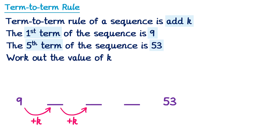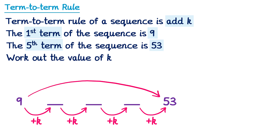From the second to the third term, we add k. And the same from the third to the fourth, and the fourth to the fifth. Notice how to get from 9 to 53, we need to add k four times. To solve a question like this, I like to imagine how we get from 9 to 53 in one big jump.